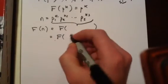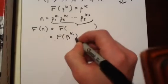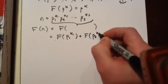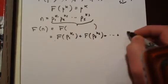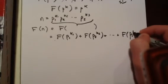Therefore, this is equal to f of p1^k1 plus f of p2^k2 plus f of ps^ks. And as we showed above, each of these terms is equal to itself.